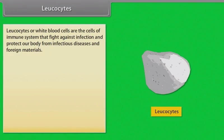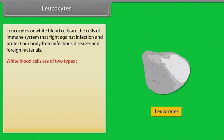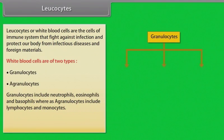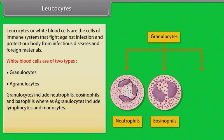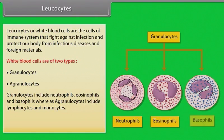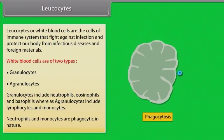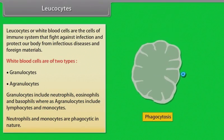Leukocytes or white blood cells are the cells of the immune system that fight against infection and protect our body from infectious diseases and foreign materials. White blood cells are of two types: granulocytes and agranulocytes. Granulocytes include neutrophils, eosinophils and basophils, whereas agranulocytes include lymphocytes and monocytes. Neutrophils and monocytes are phagocytic in nature.